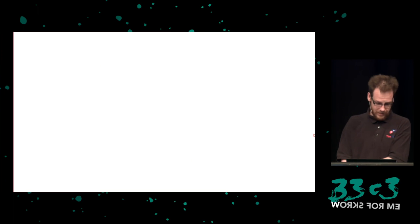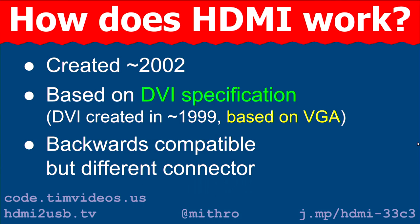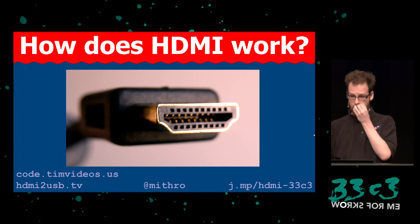So that's the introduction — why I'm talking about this. Now, how does HDMI work? HDMI is actually rather old now — it was created in 2002 and is based on the DVI specification, which was created in 1999. DVI is now 17 years old and was created to replace VGA. HDMI is backward-compatible with DVI but uses a different connector. You've probably all seen this connector. If you look closely, you can see there are 19 pins, 19 connectors.